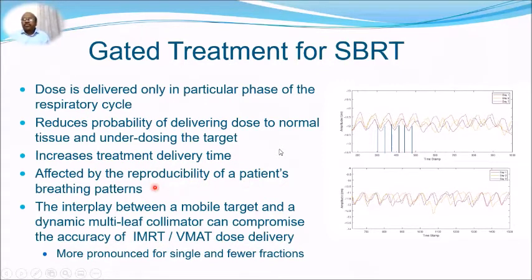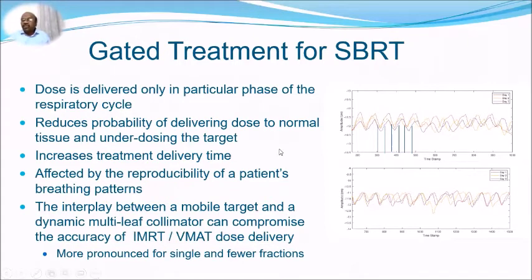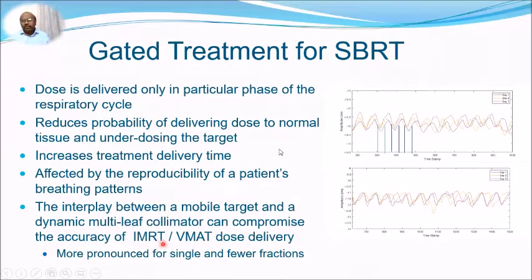Gated treatment is affected by the reproducibility of the patient's breathing pattern, which can significantly vary from day to day. There is also an interplay between the mobile target and the dynamic multi-leaf collimator that can compromise the accuracy of IMRT or VMAT dose delivery. This interplay effect is very pronounced for single-fraction or few-fraction treatments; with many fractions it tends to average out. For 3D-CRT it is not an issue, but for IMRT or VMAT this interplay must be considered.